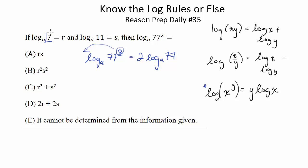Now, we look at 77 and we might see that, wait a minute, 77 is just the product of 7 times 11. So I can rewrite this as 2 log base a of 7 times 11.